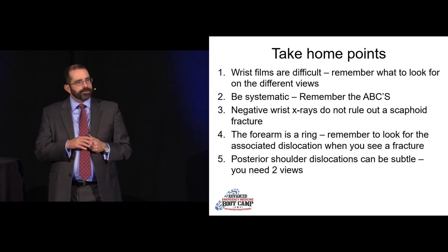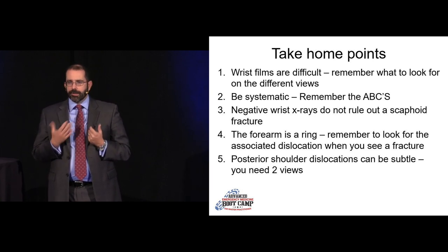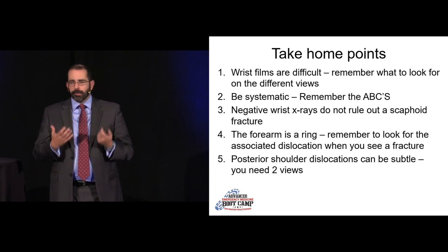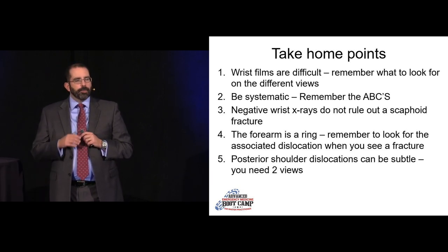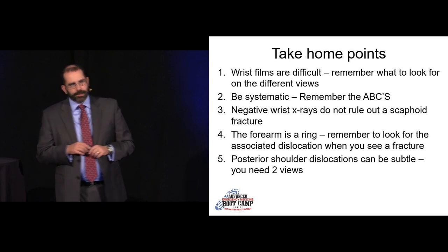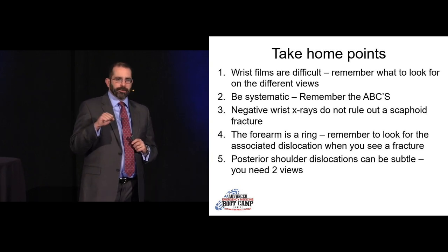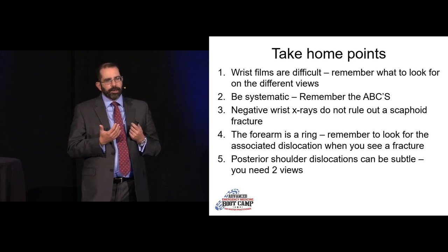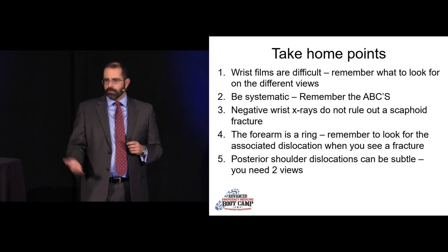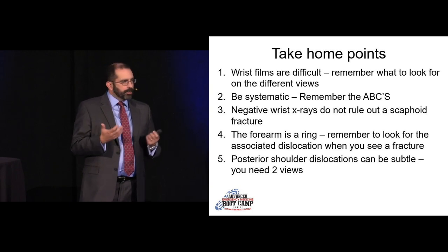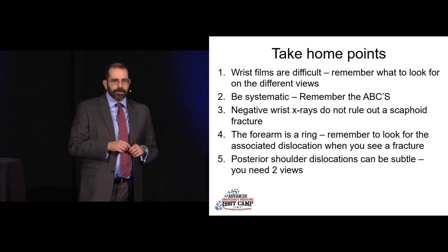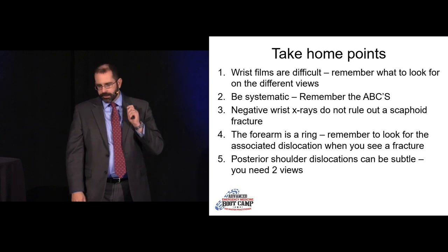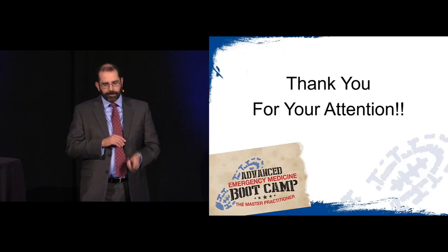Take-home points: wrist films are difficult — take your time, just like with feet, due to all the bony overlap. Missing injuries carries high risk of litigation. Remember your ABCS: alignment, bones, cartilage, joint spacing. Negative X-rays do not rule out a scaphoid fracture — there's literature suggesting early MRI may be more cost-effective than splinting and repeat films. Remember the forearm is a ring — if you see a break in one place, look for a break in the other. Posterior shoulder dislocations can be super subtle — always get two views of the shoulder.